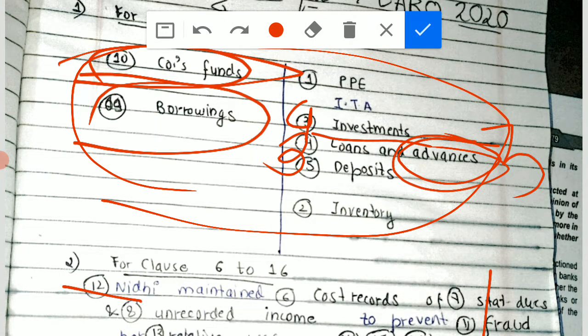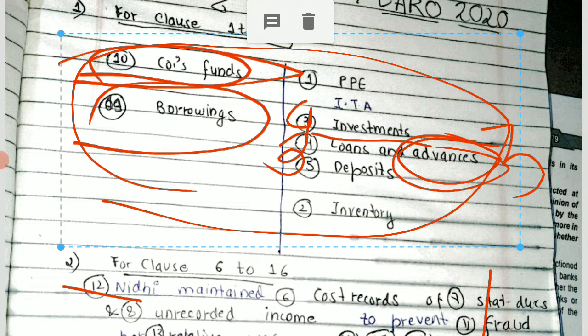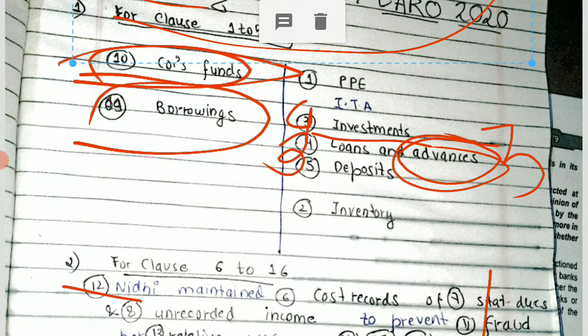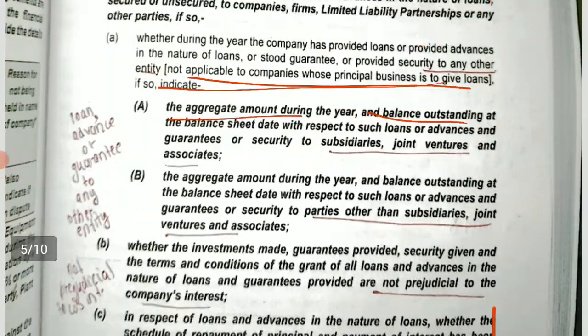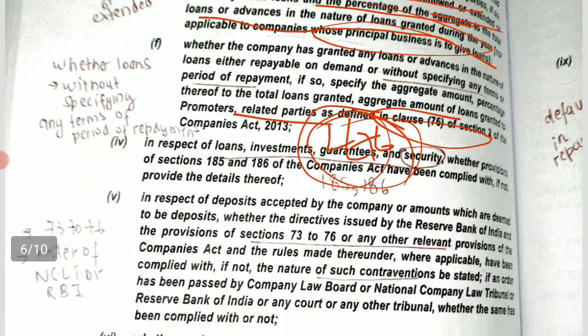We have already discussed the first four clauses. Let's quickly revise: the first clause was about Property, Plant and Equipment along with intangible assets; the second was about investments; the third was about loans and advances; the fourth was about investments. Now we are going to discuss the fifth one, which will report about deposits, and the ninth and tenth — ninth is borrowings and tenth is about the company's funds.